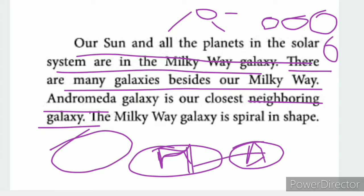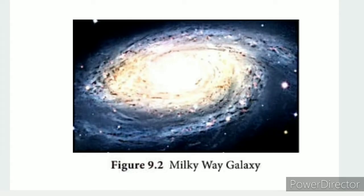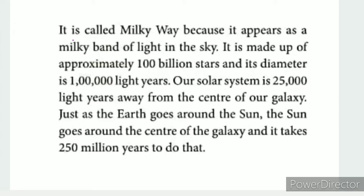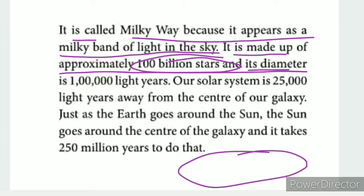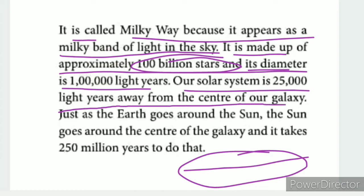Our galaxy is called the Milky Way. It is called Milky Way because it appears as a milky band of light in the sky. It is made up of approximately 100 billion stars. The diameter of the Milky Way is 1 lakh light years. Our solar system is about 25,000 light years away from the center of the galaxy.